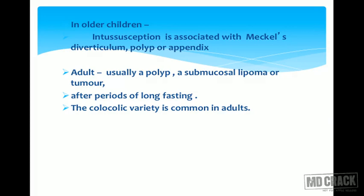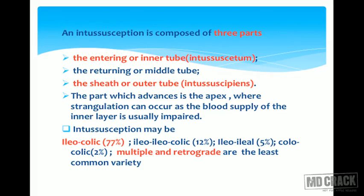In adults, intussusception is usually seen following a polyp, submucosal lipoma, or tumor. In adults, it is seen after a period of long fasting and the colocolic variety is common. The intussusception is composed of three parts: the entering or inner tube called the intussusceptum, a returning or middle tube, and the outer sheath called the intussuscipiens.